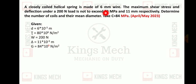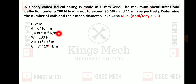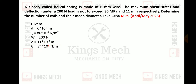Given data: wire diameter d = 6mm = 6×10⁻³ m. Maximum shear stress = 80 MPa = 80×10⁶ N/m². Load W = 200 N. Maximum deflection δ = 11mm = 11×10⁻³ m.